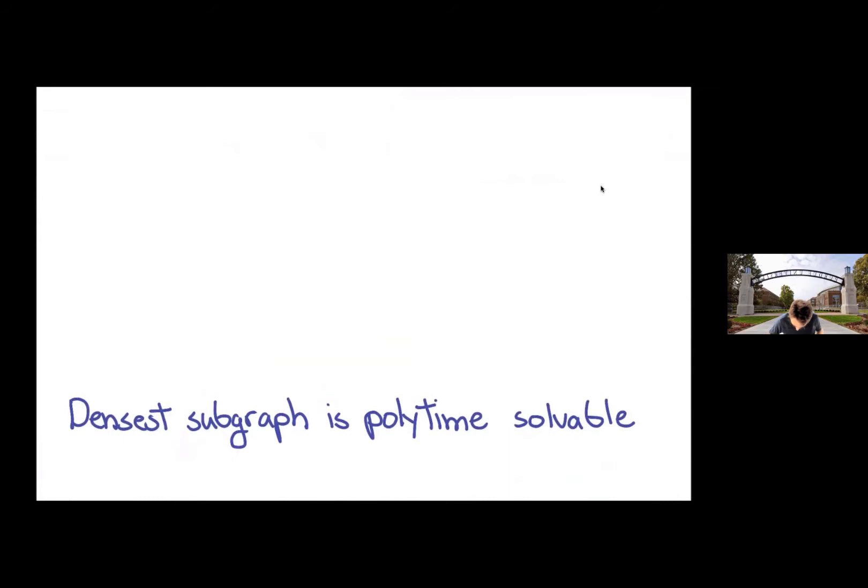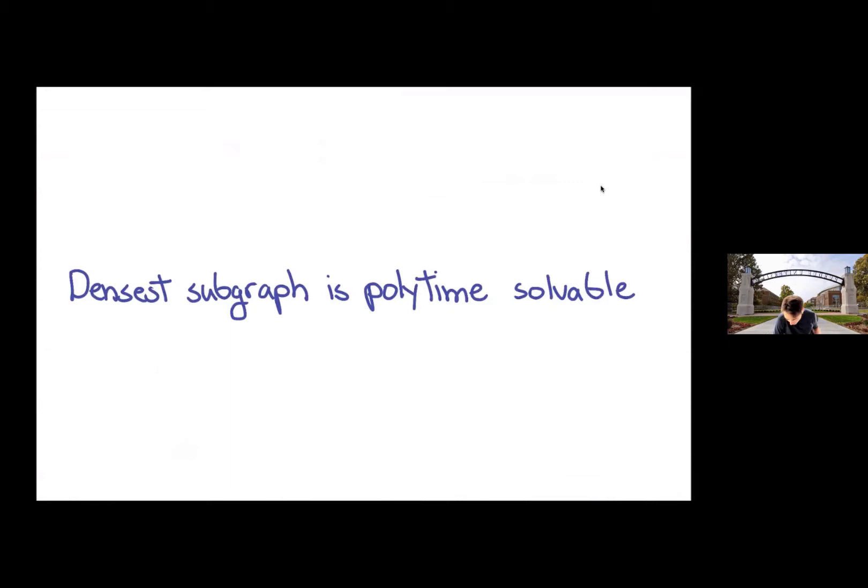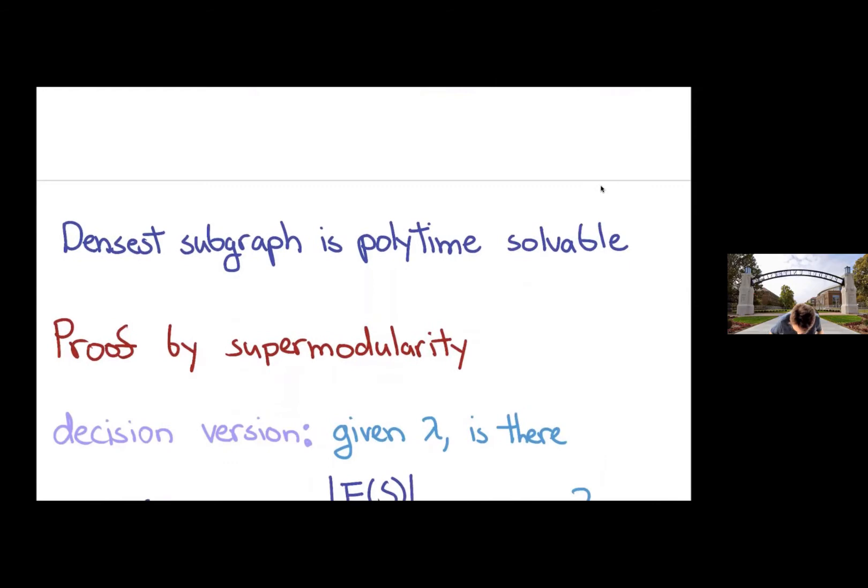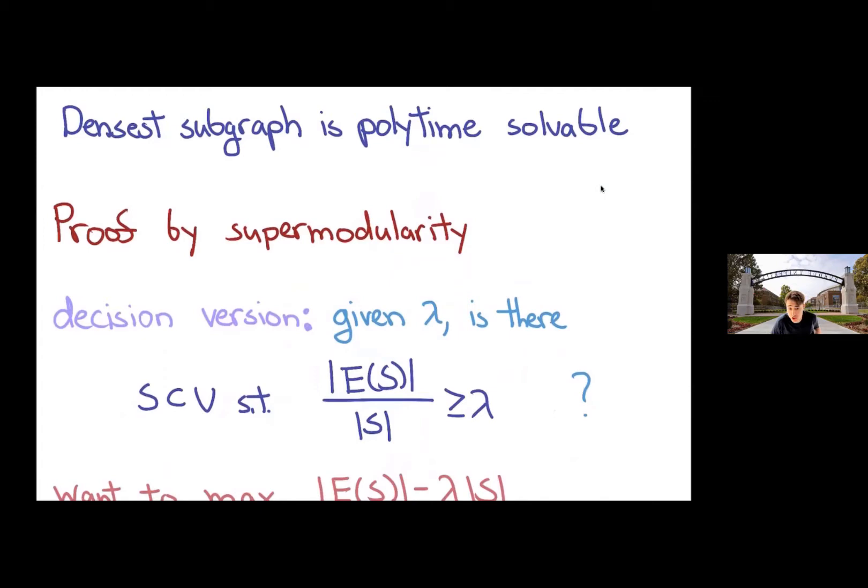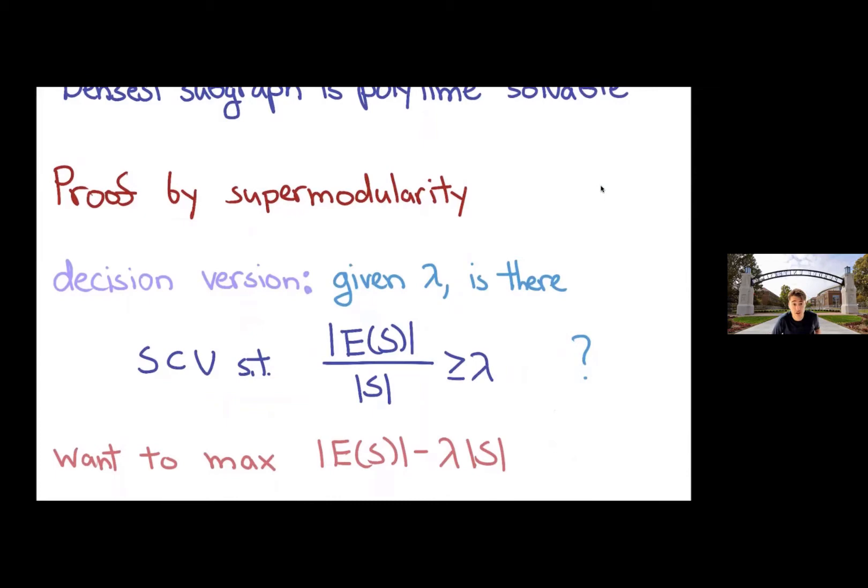I think that a basic appeal of this problem compared to finding a large clique is that it's polynomial time. I'm sure everyone here is aware. Here's maybe a quick proof by supermodularity. Let's consider the decision version of the problem. You're given some value lambda, you want to find a set with density at least lambda. To do that, we might want to maximize the number of edges minus lambda size of S and see if we can get this thing to be at least zero.